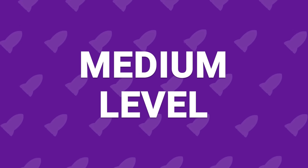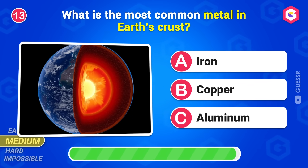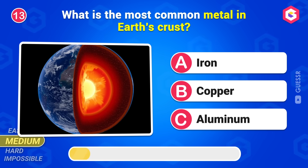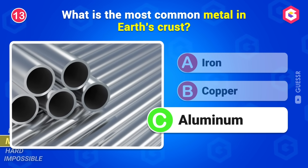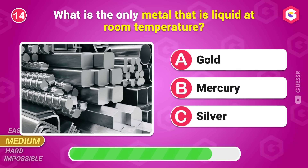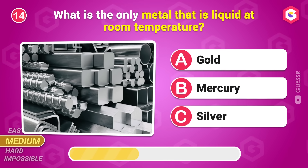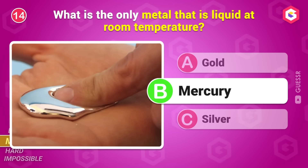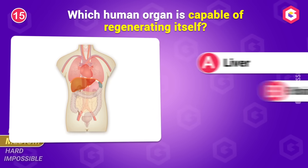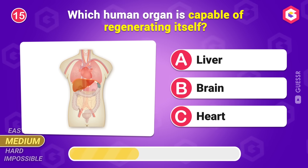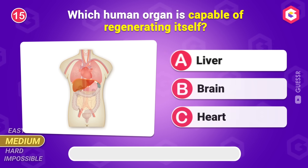Let's step it up a bit. Are you ready? Medium level. What is the most common metal in Earth's crust? Aluminum. What is the only metal that is liquid at room temperature? Mercury. Which human organ is capable of regenerating itself? Liver.